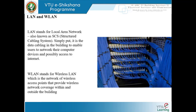Starting with LAN and WLAN — LAN is something we are very familiar with. It stands for local area network, and WAN stands for wide area network. WLAN that we are talking about is wireless LAN. By definition, LAN stands for local area network, also known as a structured cabling system — simply put, it is data cabling in the building to enable users to network their computer devices and possibly access the internet.